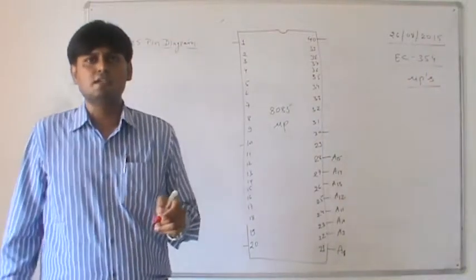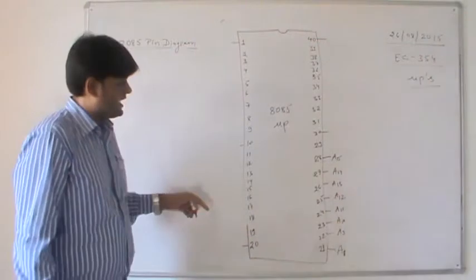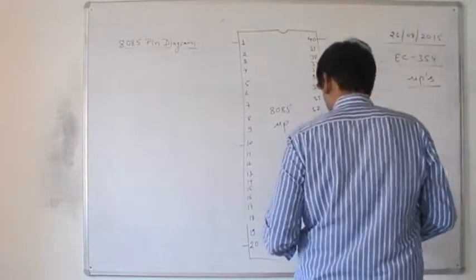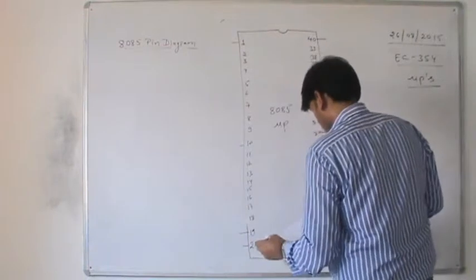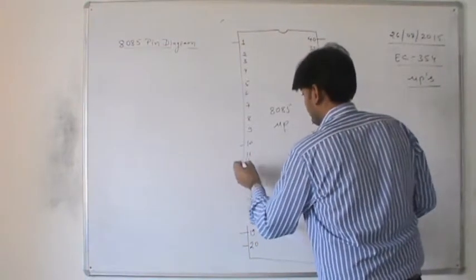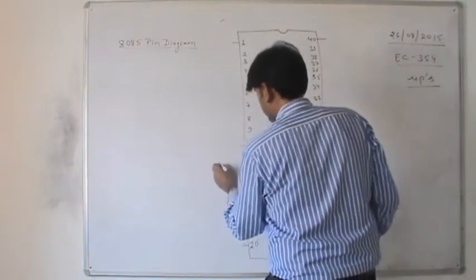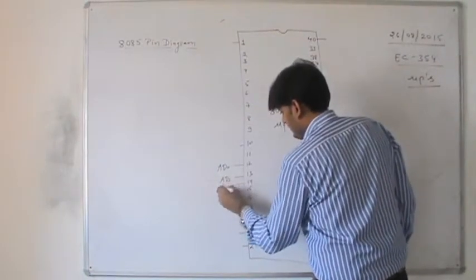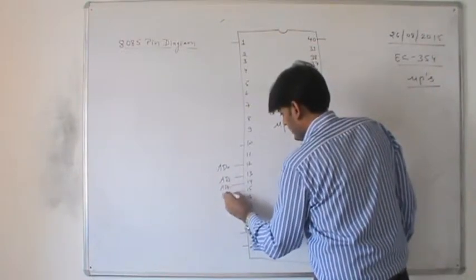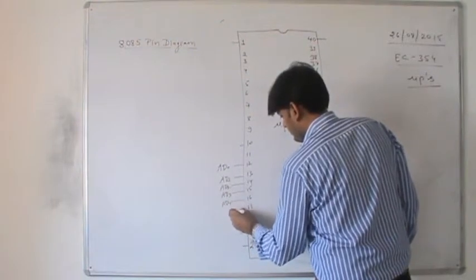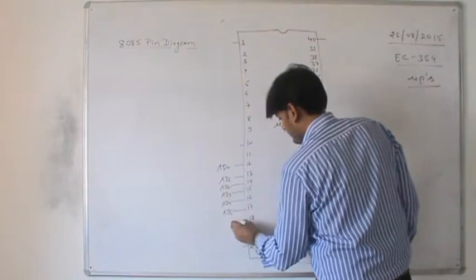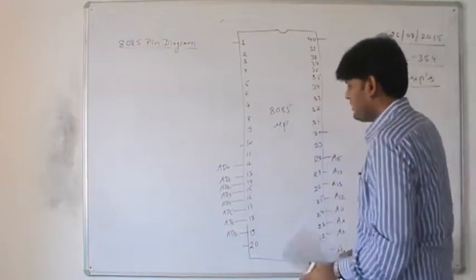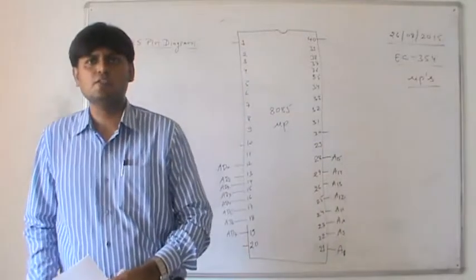The lower order address and data bus is a multiplexed one. We have AD0 to AD7 — that is, address and data — from pin number 19 down to pin number 12. So pin number 12 is AD0, then AD1, AD2, AD3, AD4, AD5, AD6, and AD7. So we have the multiplexed address and data bus for the 8085 microprocessor.